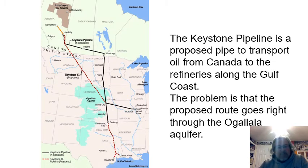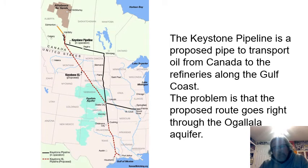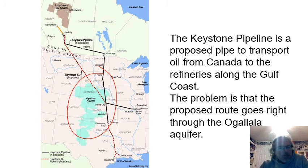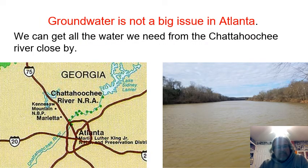Another problem for the Ogallala Aquifer was the Keystone Pipeline — a proposed method to transport oil from Canada to Louisiana and Texas. The problem was they wanted to bury that pipeline underground right through the aquifer, and pipelines are notoriously leaky. If you leak oil in the ground and your aquifer is in the ground, you get oil in your water, which would contaminate it and make it unusable. People in that part of the country were very resistant because they didn't want to risk contaminating the aquifer used to grow our corn.